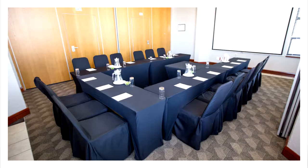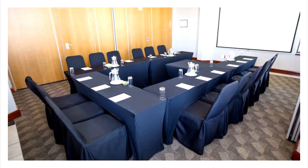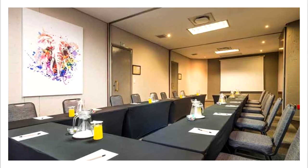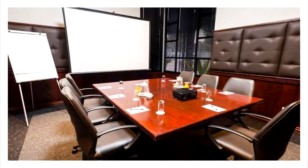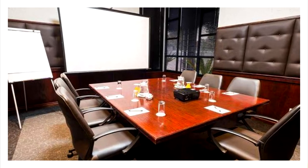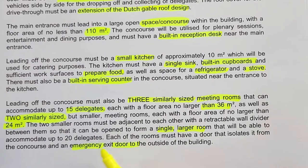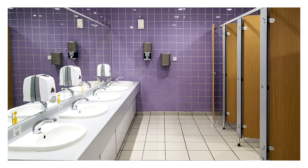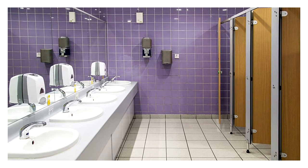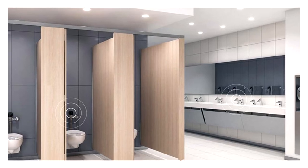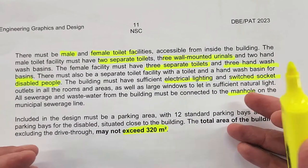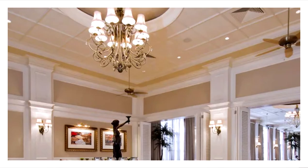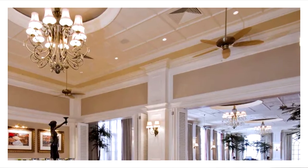You'll need three similar-sized meeting rooms that can host at least 15 delegates each, no larger than 36 square meters, plus two smaller meeting rooms for smaller groupings. There will be stacking doors between the smaller rooms so they can open up into a bigger area. The PAT also details toilet facilities — male, female, and disabled access — as well as lighting fittings that will create ambience in your design, so consider those carefully.